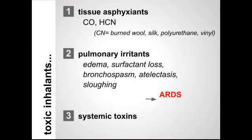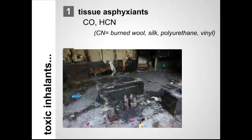Toxic inhalants are divided into three categories. The first is tissue asphyxians — for example, carbon monoxide and hydrogen cyanide. These cause hypoxia at a chemical cellular level, either through direct interaction with hemoglobin or at the mitochondrial level. Cyanide is produced from the burning of wool, silk, vinyl, and polyurethane — essentially things that are inside houses — so this is a very high risk for patients in house fires.